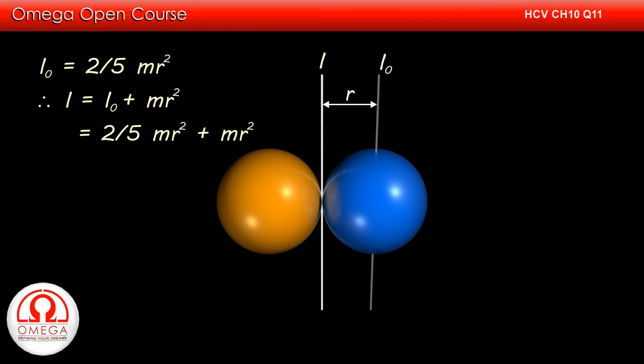Putting the value of I₀, we get I is equal to 2/5 mr² plus mr², or 7/5 mr².